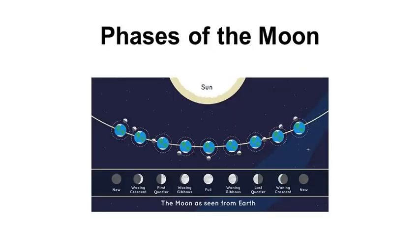Viewed from earth, the perceived shape of the moon changes every night. This phenomenon is known as the phases of the moon.